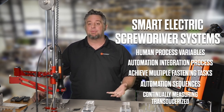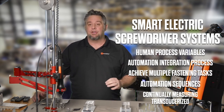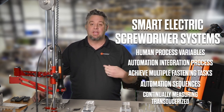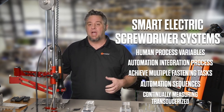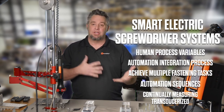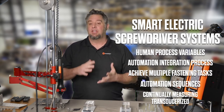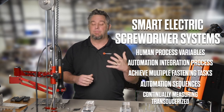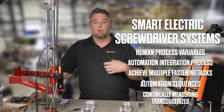We can capture the torque data. Many of the systems have a transducerized sensor in the tool itself, so we're constantly measuring what's happening with the torque through the use of a transducer. By integrating an error proofing system with a smart DC control tool, we have the ability to lock down and error proof an assembly that may otherwise give the operator the opportunity to produce errors.